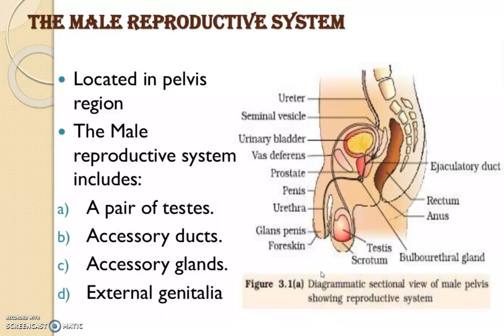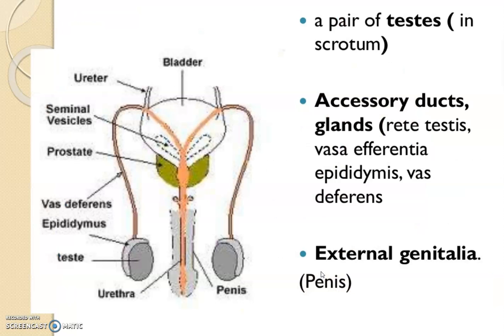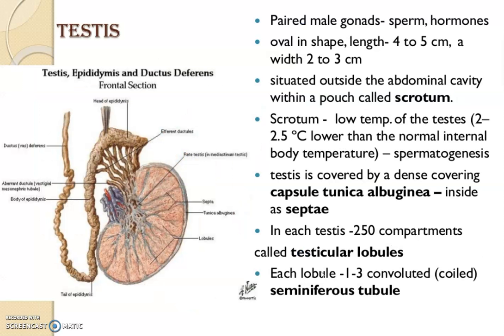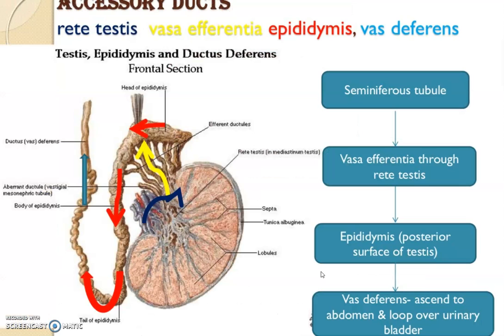The male reproductive system is located in the pelvic region. It consists of a pair of testes, accessory ducts, accessory glands, and external genitalia. Accessory glands include the seminal vesicles, epididymis, and vas deferens. The external genitalia is the penis, which is the main copulatory organ. The scrotum is a pouch-like structure situated outside the abdominal cavity, which lowers the temperature by 2 to 2.5 degrees below normal body temperature, helping in sperm production.